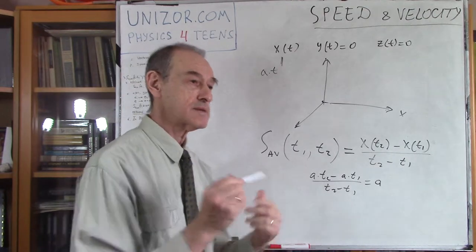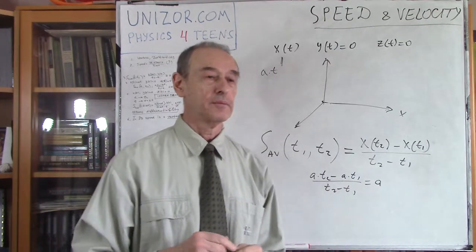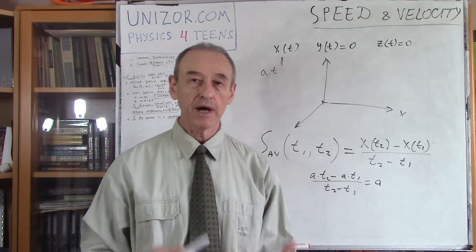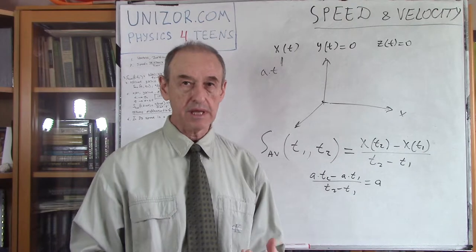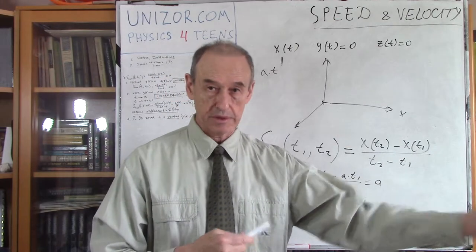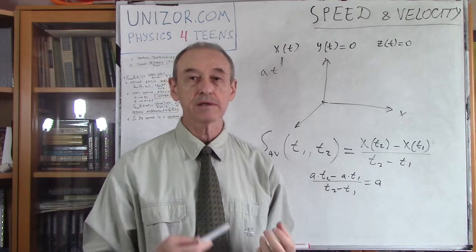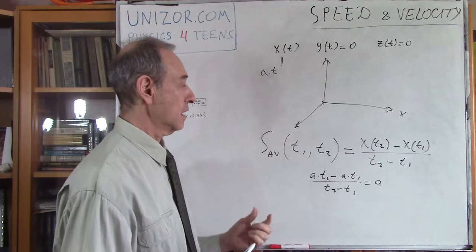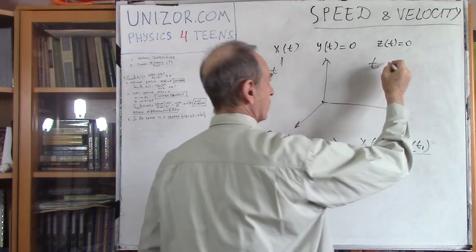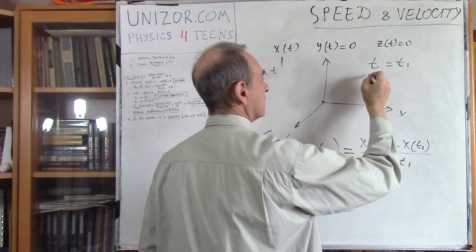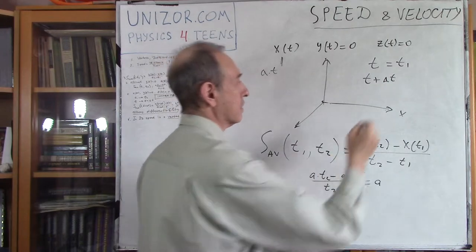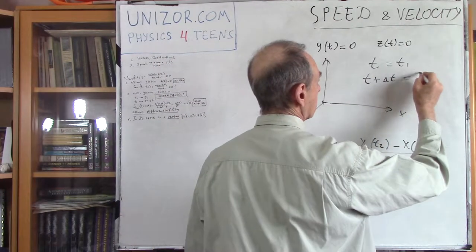Let's think about how we can define speed a little bit more precisely — not the average speed. I would like to be able to define the so-called instantaneous speed: speed at any moment of time. Because at one moment of time the speed might be different from another moment. So, what do we do to define the speed? You have a certain moment of time — let's call it t1 — and then another moment of time slightly after that, t plus delta t, where delta t is an increment of time. This will be our t2.